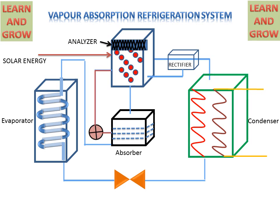In the Generator, Ammonia vapor and some water vapor are formed. Then in the Analyzer, the water vapor are sent back from the Generator to the Absorber. The remaining vapor then go to the Condenser, but in the way there is a Rectifier, which is a heat exchanger that converts water in the Ammonia vapor into liquid form and sends this water back to the Generator and then to the Absorber. Pure Ammonia vapor then proceeds to the Condenser.